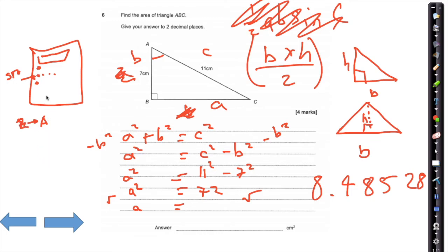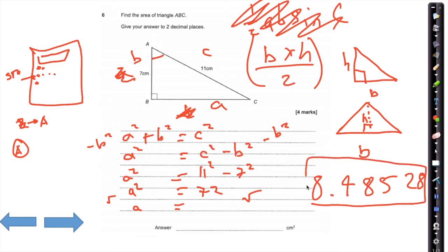If you press alpha then A, your value will come up — you've stored that number in your calculator. If you don't want to do that, I would recommend taking your value for A as 8.48528 — use those decimal places and you won't have any rounding errors later on.